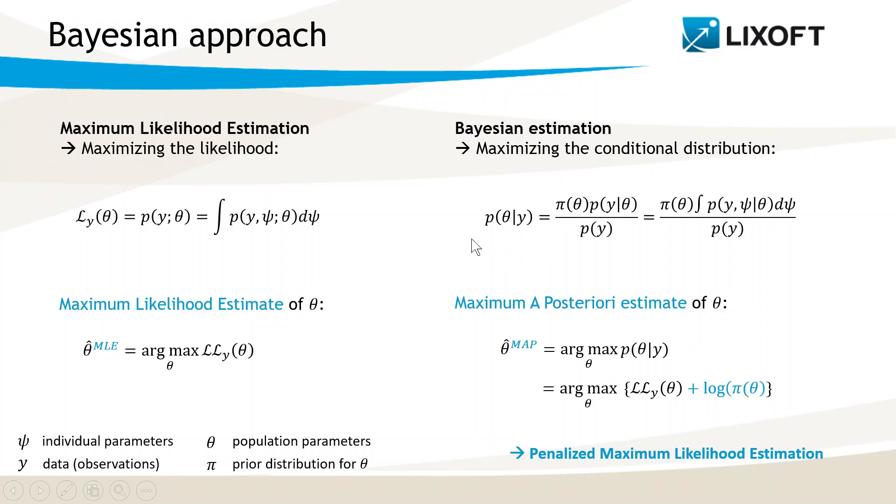It is then possible to define the posterior distribution of θ like here. We can estimate this conditional distribution and the value of θ that maximizes it. It is called the maximum aposteriori estimate of θ. The conditional distribution can be decomposed, as here, with the log likelihood that appears for the maximization.